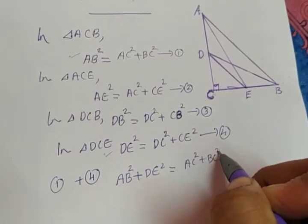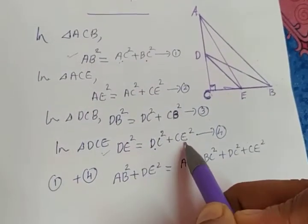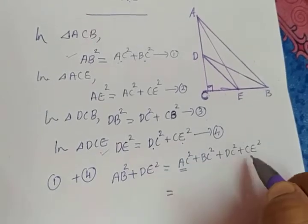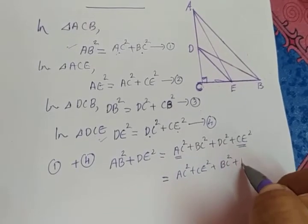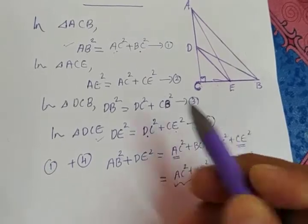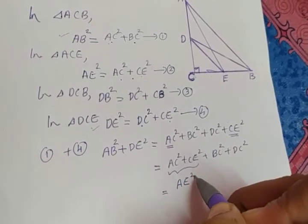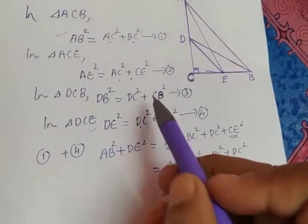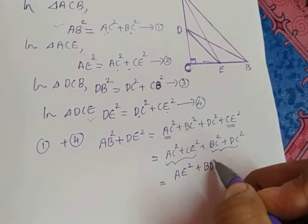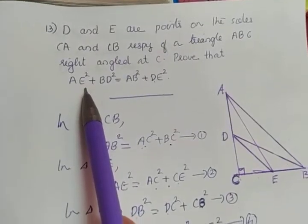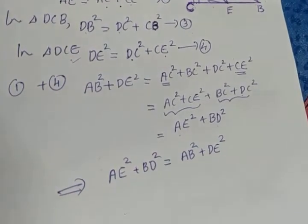Adding the right-hand sides: AC square plus BC square plus DC square plus CE square. Now group AC square and CE square together, and BC square and DC square together. From equation 2, AC square plus CE square equals AE square. From equation 3, BC square plus DC square equals DB square. So we get AE square plus BD square, which is exactly what we had to prove. Hence proved.